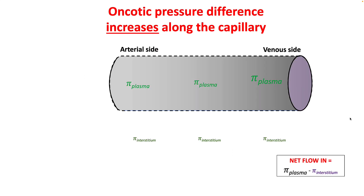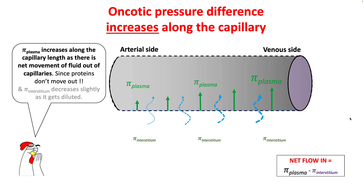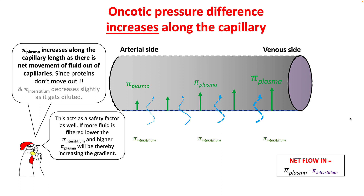Oncotic pressure, on the other hand, increases along the capillary as you move from the arterial to the venous side. This happens because proteins do not cross this membrane easily, so protein concentration increases as you move from arterial to venous side, therefore increasing plasma oncotic pressure. The amount of fluid that returns because of the oncotic pressure difference increases as you move toward the venous side. This again acts as a safety factor: if more fluid is filtered, you have much higher plasma oncotic pressure, so more fluid is returned back to the capillaries.